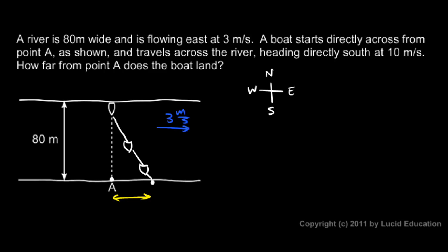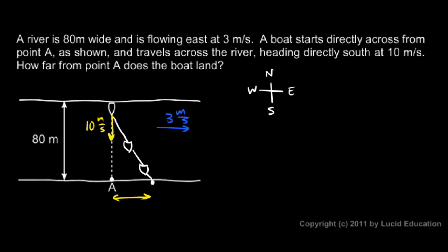We know some things about the vertical motion. We know the boat's moving at 10 meters per second — I'll draw that on my diagram, 10 meters per second. So we know the vertical velocity is 10 meters per second, and we know the vertical or north-south distance is 80 meters. If we know those two things, then we can find the time. So for the north-south part of the problem, I'm only considering the north-south variables. The time is going to be the distance divided by the velocity.